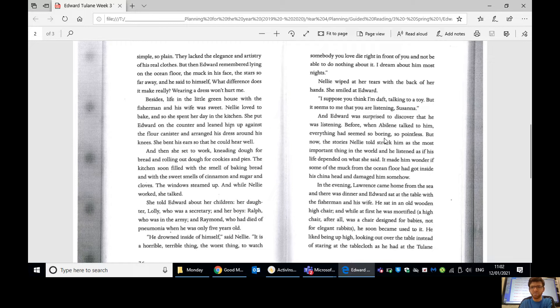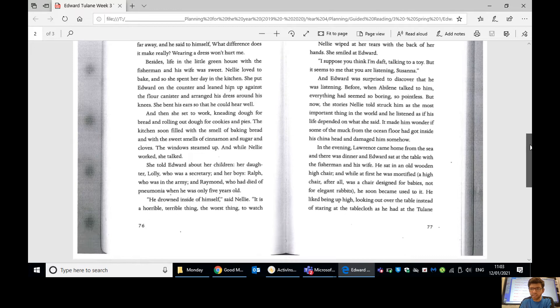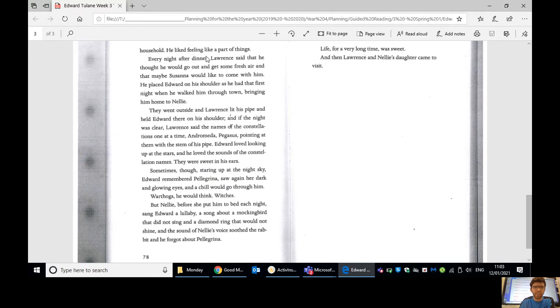And Edward was surprised to discover that he was listening. Before, when Abilene talked to him, everything seemed so boring, so pointless. But now, the stories Nellie told struck him as the most important thing in the world, and he listened as if his life depended on what she said. It made him wonder if some of the muck from the ocean floor had gone inside his china head and damaged him somehow. In the evening, Lawrence came home from the sea. And there was dinner, and Edward sat at the table with the fisherman and his wife. He sat in an old wooden high chair, and while at first, he was mortified. A high chair, after all, was designed for babies, not for elegant rabbits. He soon became used to it. He liked being up high, looking out over the table, instead of staring at the tablecloth, as he had done in the Tulane household. He liked feeling like part of things.